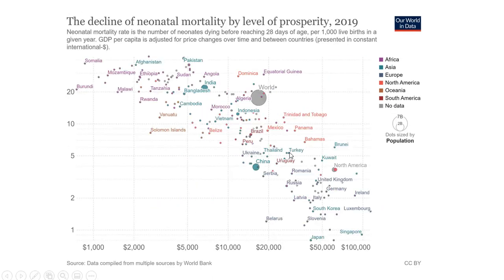The decline of neonatal mortality by level of prosperity. Here we're looking at neonatal mortality rate, which is the number of babies dying before reaching 28 days of age. We can see that this rate — the number dying per 1,000 live births — is decreasing as GDP per capita rises.